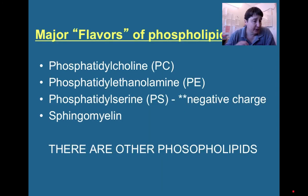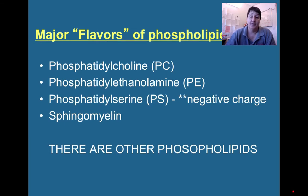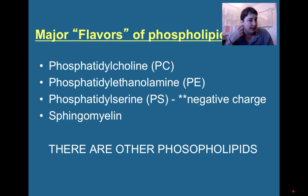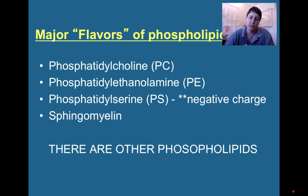There are four major flavors of phospholipids: phosphatidylcholine (PC), phosphatidylethanolamine (PE), phosphatidylserine (PS), and sphingomyelin (SM). These are the four major actors in creating cell membranes—any mammalian or bacterial cell membrane. There are other specialized phospholipids we'll discuss. Note that phosphatidylserine is the only one with an actual negative charge, and that's going to become important shortly.